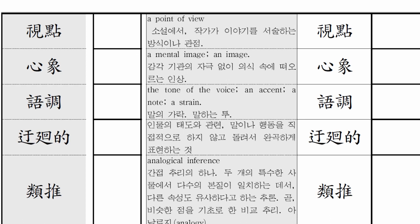돌아가면서 한 사람씩 또박또박 읽었으면 좋겠어요. 알았죠? 시점을 영어로 뭐라고 한다고요? 이렇게 같이 동시에 읽어두라고. 그러면 영어도 언제든지 다 공부할 수 있어요. 이게 이열치열이야, 한자를 영어로 공부하는 거지. 그렇게 공부하시면 좋겠어요.